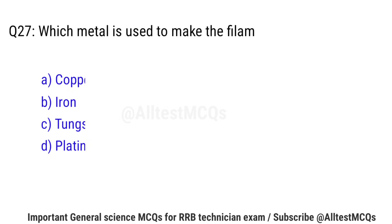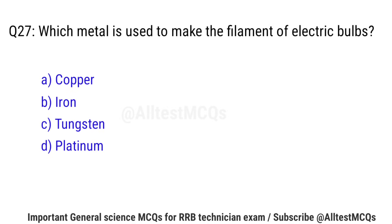Question No. 27: Which metal is used to make the filament of electric bulbs? Right option is C: Tungsten.